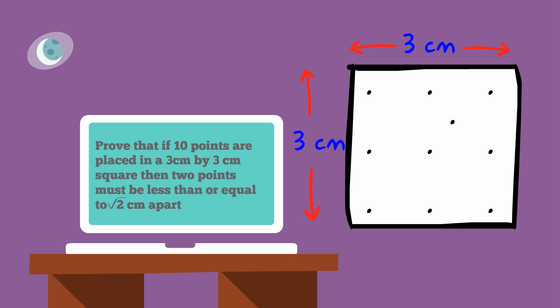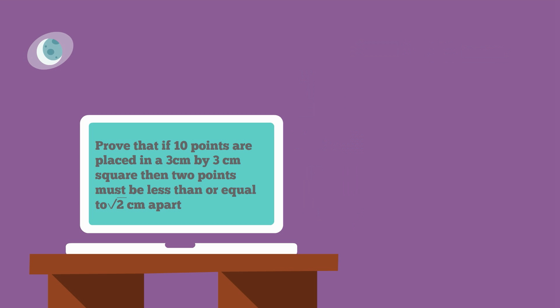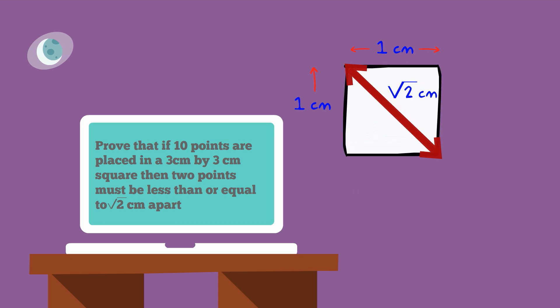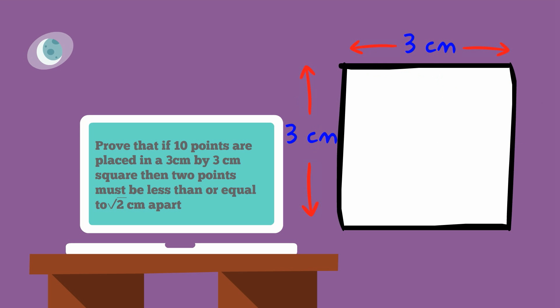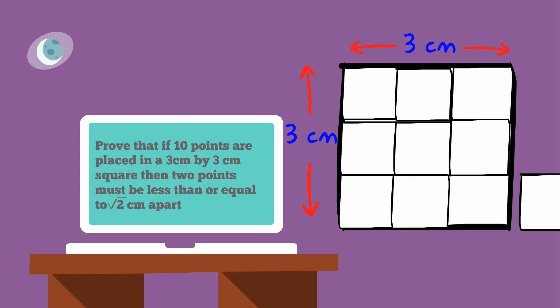On to the second problem: prove that if 10 points are placed in a 3cm by 3cm square, then two points must be less than or equal to the square root of 2cm apart. The clue is in the square root of 2 — that's the diagonal of a 1cm by 1cm square. There are two interesting things about a 1cm by 1cm square. First, if you have two points on or within the boundary of this square, the distance between them must be equal to or less than the square root of 2cm. Second, if we divide the 3cm by 3cm square into smaller 1cm by 1cm squares, there would be 9 of these smaller squares covering the bigger square.